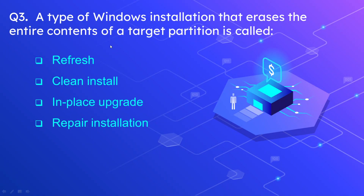Question number 3: A type of Windows installation that erases the entire contents of a target partition is called what? The options are refresh, clean install, in place upgrade, and repair installation. The correct answer is clean install. The clean install erases the entire contents of the target partition and installs a clean and new operating system.